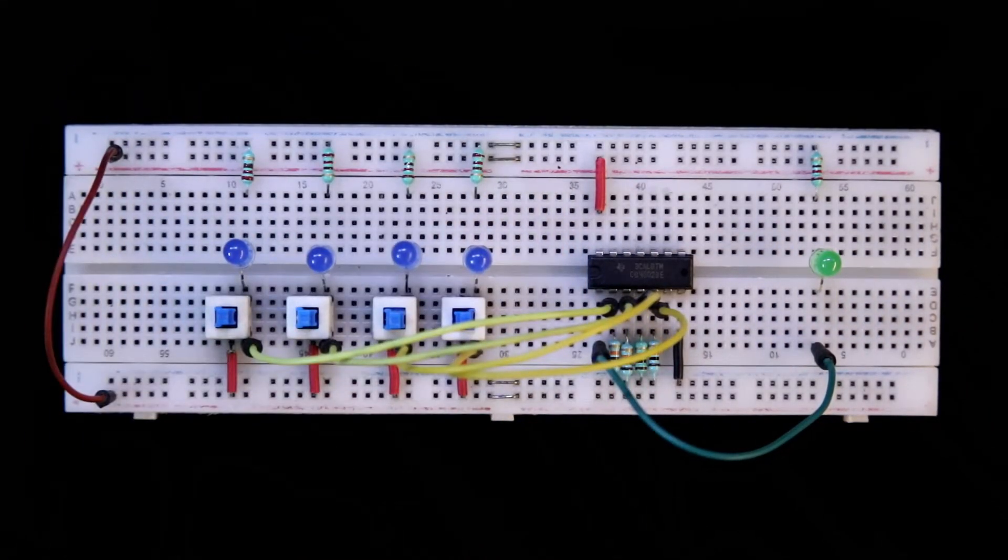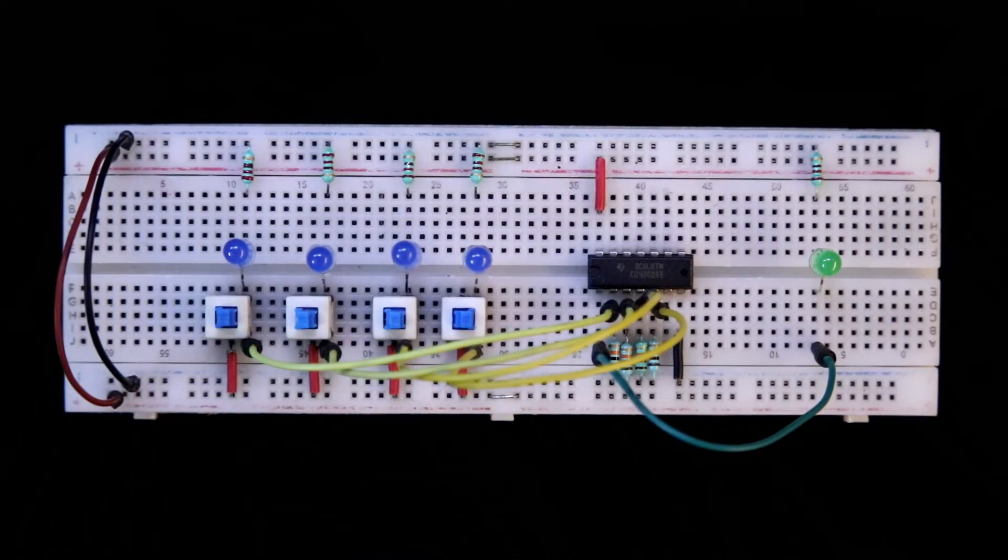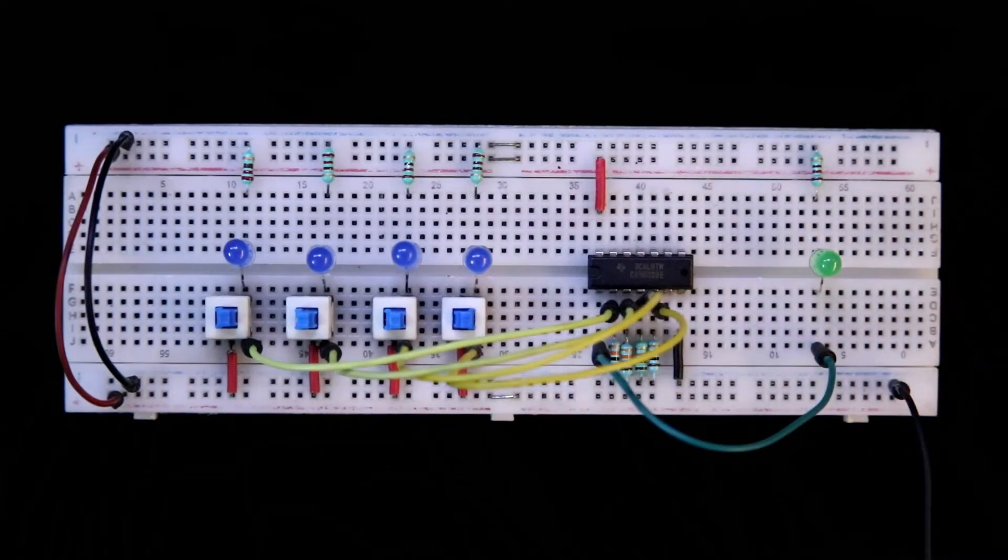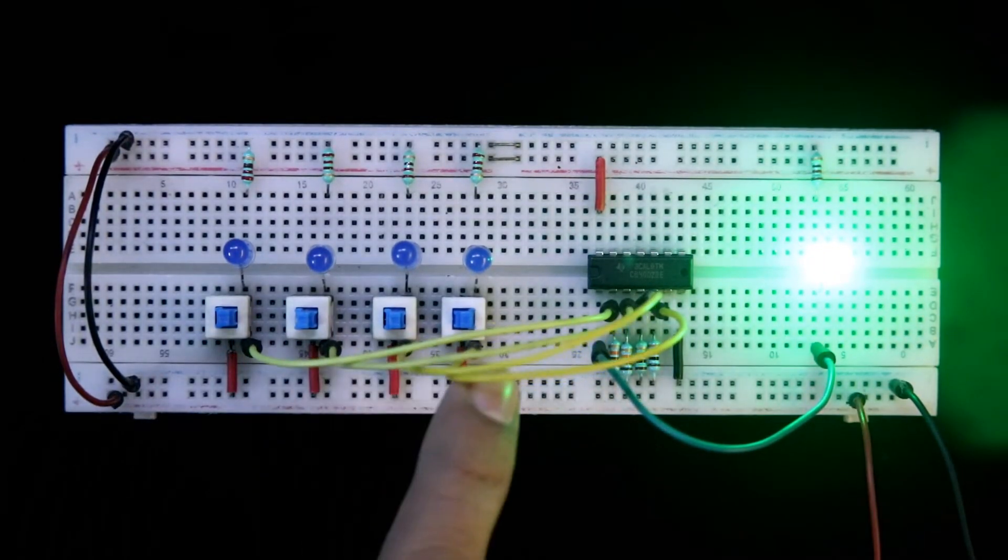Now connecting both the positive and negative rails. Now I am connecting plus 5 volts. Here is negative and the positive. All inputs are low, so we are getting output as high.